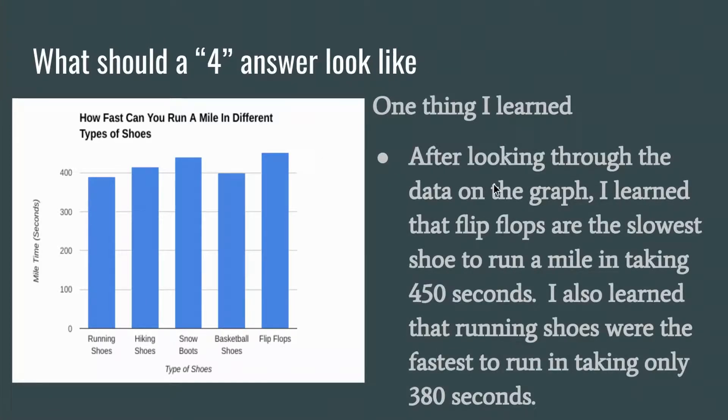After looking through the data on the graph, I learned that flip-flops are the slowest shoe to run a mile in, taking 450 seconds. I also learned that running shoes were the fastest to run in, taking only 380 seconds.